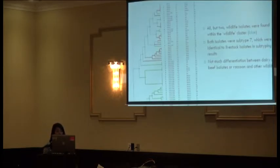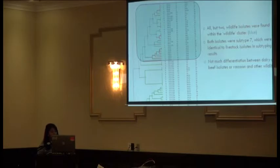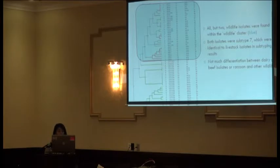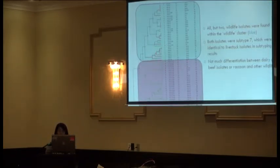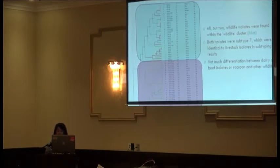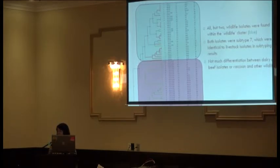From our UPGMA dendrogram analysis, wildlife isolates are represented by red lines and livestock by green lines. We identified a wildlife cluster where all but two of the wildlife isolates were found within this dendrogram cluster. Those two excluded were of subtype 7, the subtype already found in livestock. Dairy and beef isolates didn't differentiate into further clusters within the livestock cluster, and raccoon and other wildlife also didn't have further differentiation.